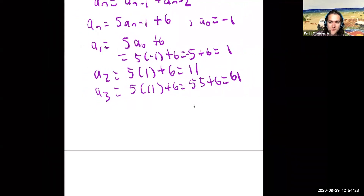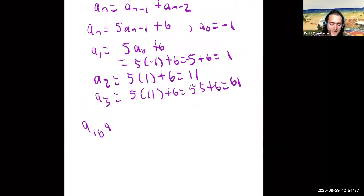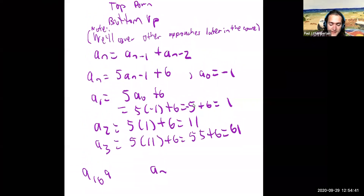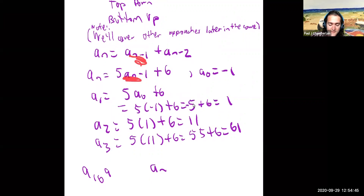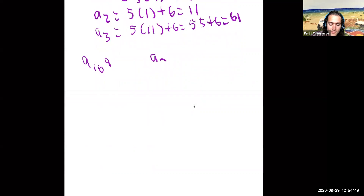But what if I wanted to find a term that's really large? Say I wanted to find a of 10 to the 9th. This would be really tricky — I'd have to compute a_4, a_5, all the way up to a very large number. So I want to be able to find a_n not in terms of prior terms like a_{n-1}, but in terms of just n. To do that, I want a closed-form solution.